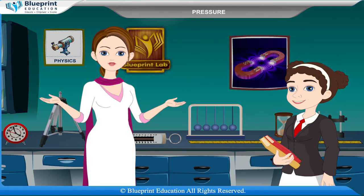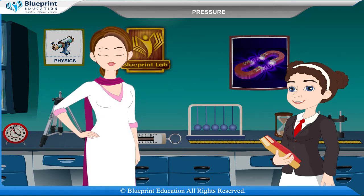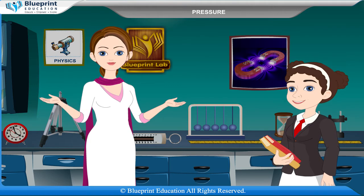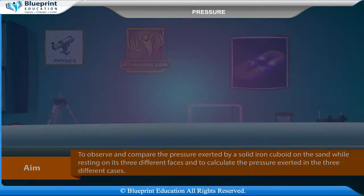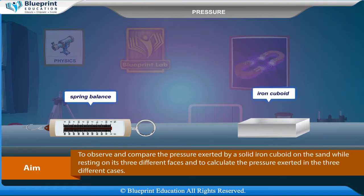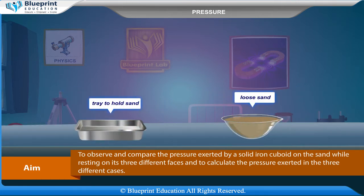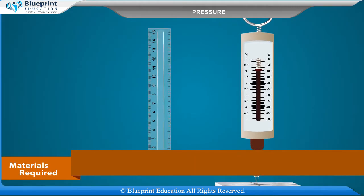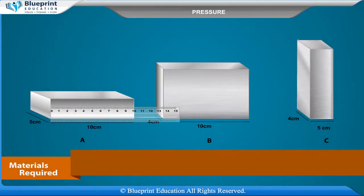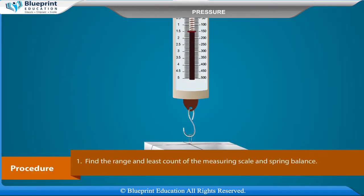Let's do an experiment to observe and compare the pressure exerted by a solid iron cuboid on sand while resting on its three different faces. The materials required are: spring balance, iron cuboid, tray to hold sand, loose sand, and a scale.